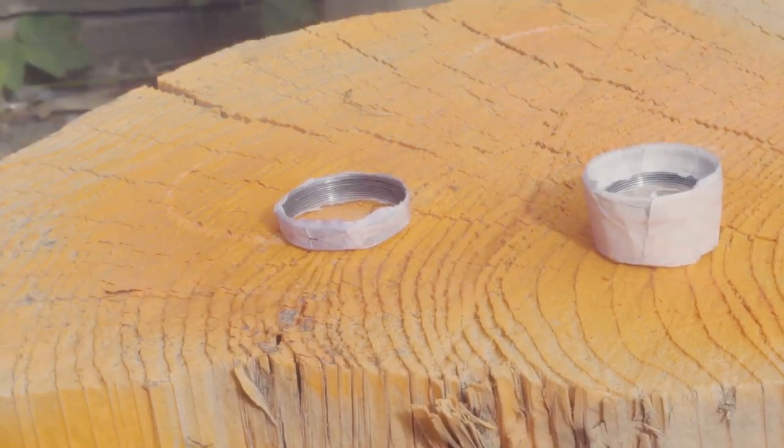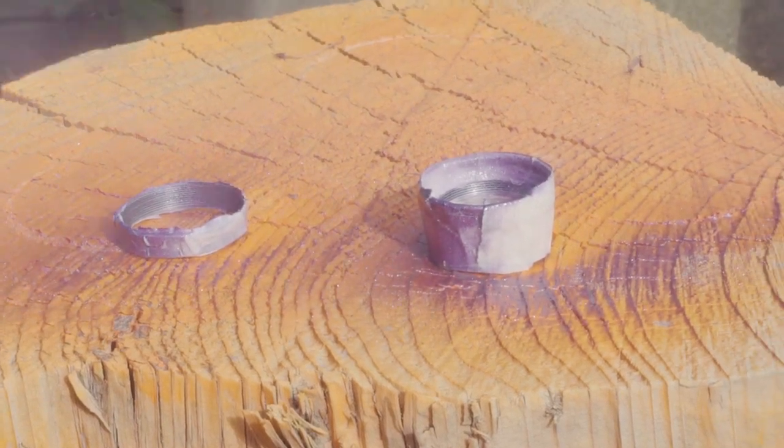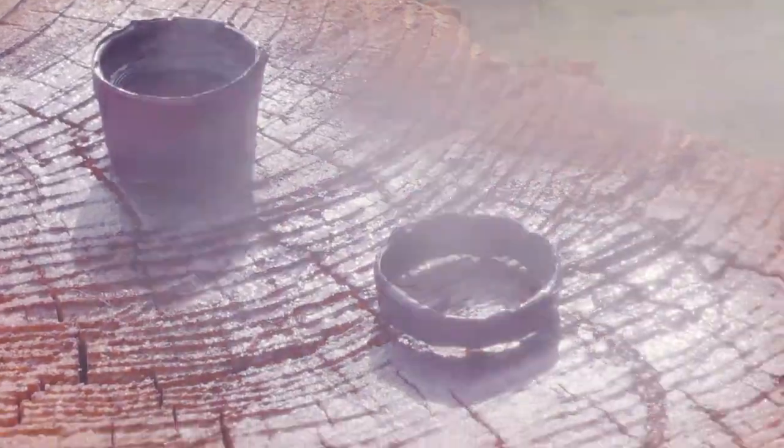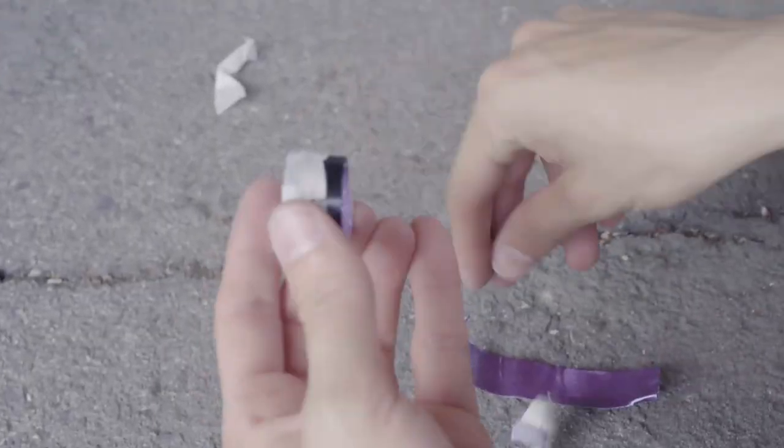Now spray it with your favorite color. Here I'm making a purple one. Make sure you get a decent amount of paint in there. When it dries off, you can remove all the masking tape.